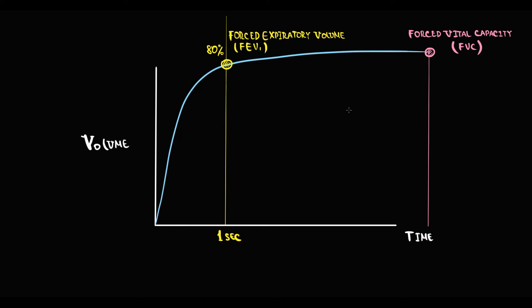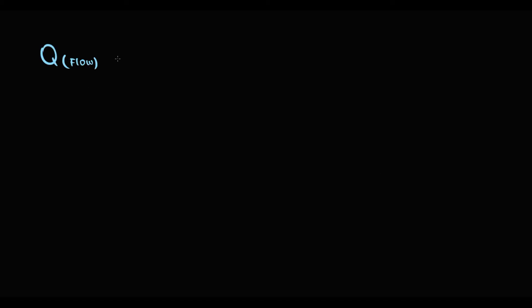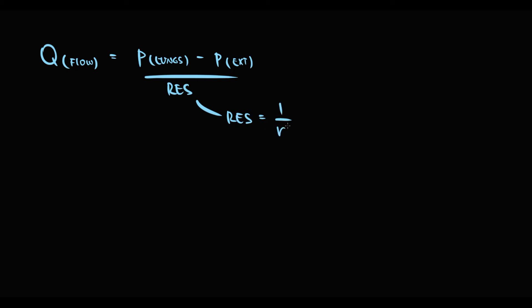To understand why these values are so important, we have to recall physiology. The flow of air during exhalation is equal to the pressure inside the lungs minus the pressure in the external environment, divided by the resistance created by the airways. Resistance is inversely proportional to the fourth power of the radius. So from this formula we see that airflow is determined by the radius of the airways.